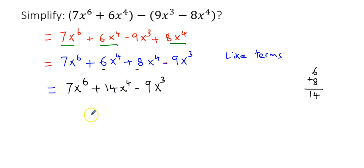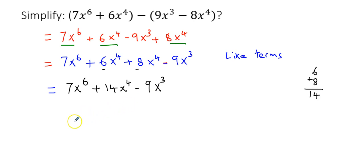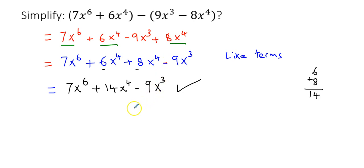We cannot simplify further because x to the power of 6, x to the power of 4, and x cubed are all unlike terms. So further simplification is not possible — leave it here. This is the simplified form of the given expression.